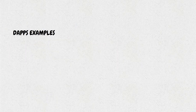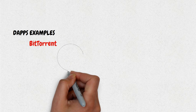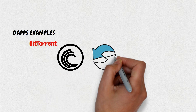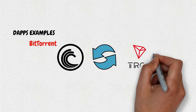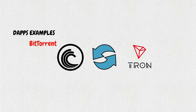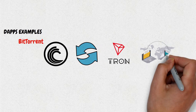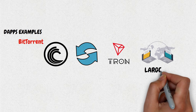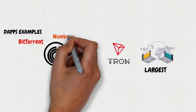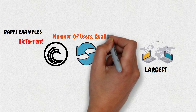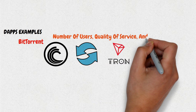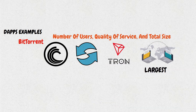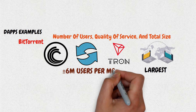dApps examples. BitTorrent: BTT is a decentralized file-sharing application on the TRON blockchain. BTT allows users to upload and download files directly between each other. BitTorrent is the largest file-sharing application in terms of number of users, quality of service, and total size of all files stored, with approximately 6 million users per month.